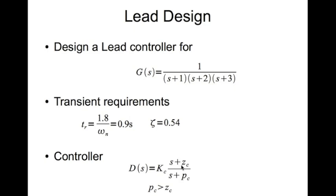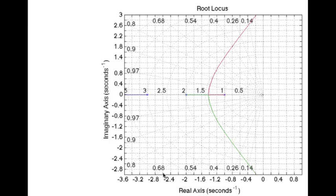The controller is of this form: D(s) = kc times (s + zc) divided by (s + pc), where the magnitude of pc is greater than the magnitude of zc. This means that zc is closer to the imaginary axis compared to pc. kc is the proportional constant.